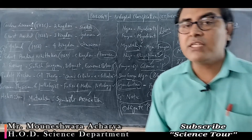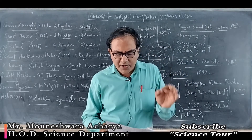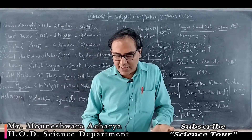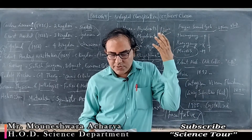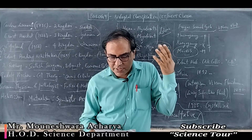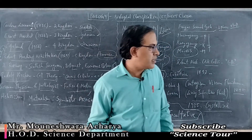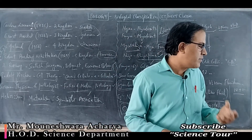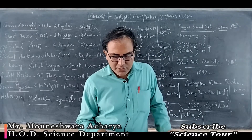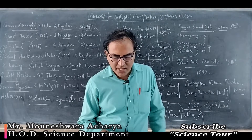Question 8: Mycobiont and Phycobiont are found in — option C, Lichens, no doubts. Already discussed in question 5. Mycorrhiza is a fungal association with roots of higher vascular plants — it cannot be the option. BGA is blue green algae — also not the option.